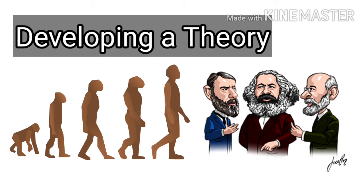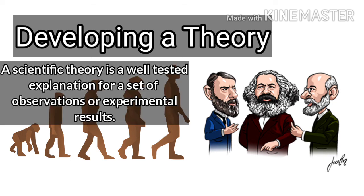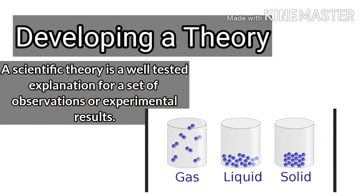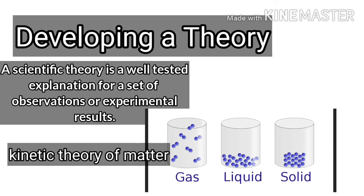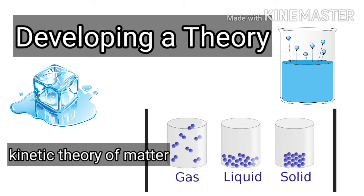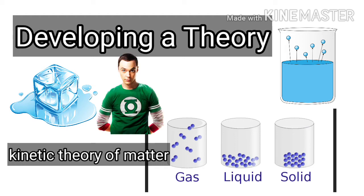Next, we have developing a theory. Once a hypothesis has been supported in repeated experiments, scientists can begin to develop a theory. A scientific theory is a well-tested explanation for a set of observations or experimental results. For example, the kinetic theory of matter states that all particles of matter are in constant motion, explaining observations such as ice melting or the pressure of a gas. Theories are never proved; instead they become stronger if the facts continue to support them. However, if an existing theory fails to explain new facts and discoveries, it may be revised or replaced.